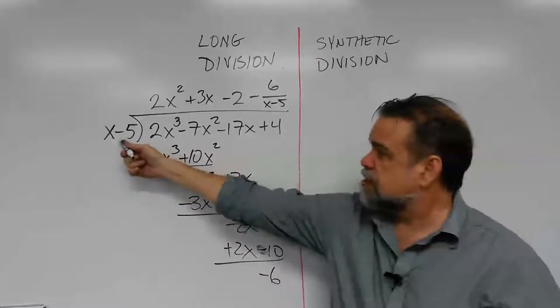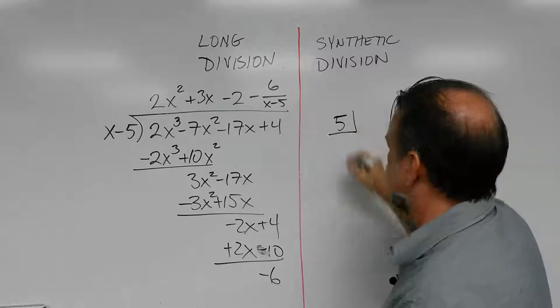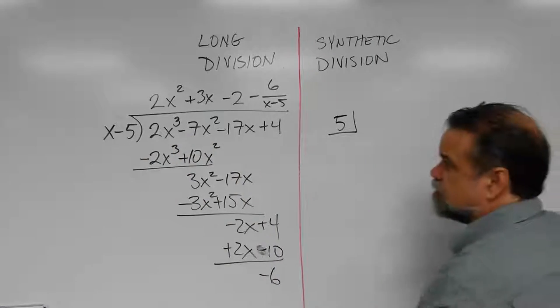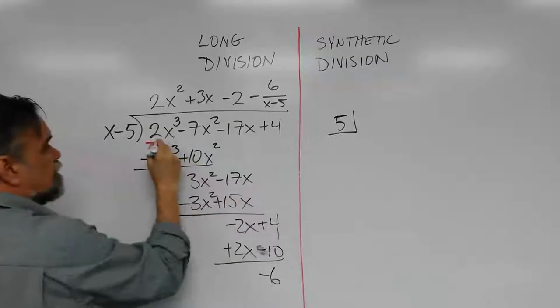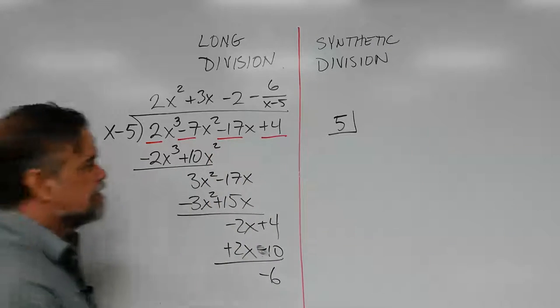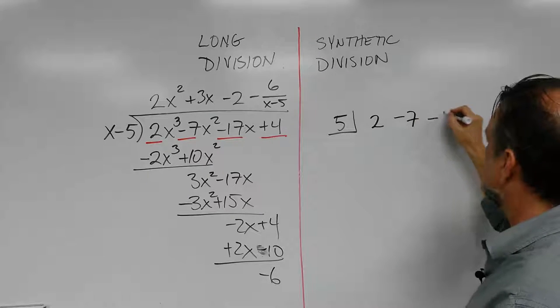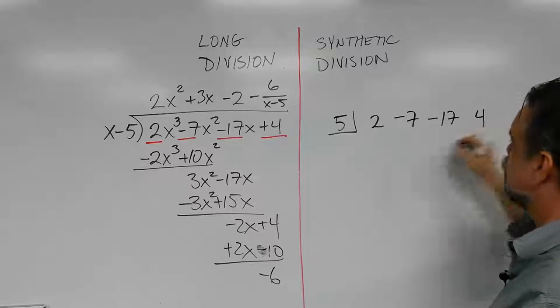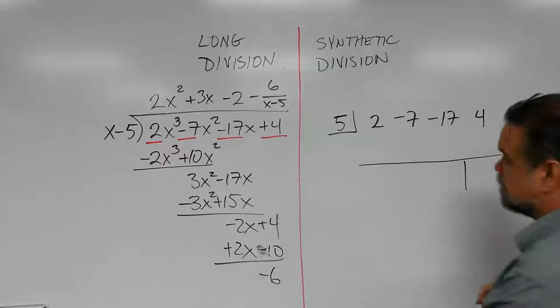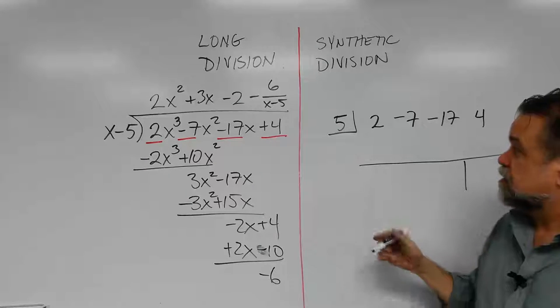So first off, I'm dividing by x minus 5, right? So I'm going to put a little 5 right here, a little angle right there. Then I write just the coefficients. So just the 2, the negative 7, the negative 17, and the 4. So 2, negative 7, negative 17, and 4. Leave a little space here, put a line there, and I'm going to put another little line right there. So now it's all set up.